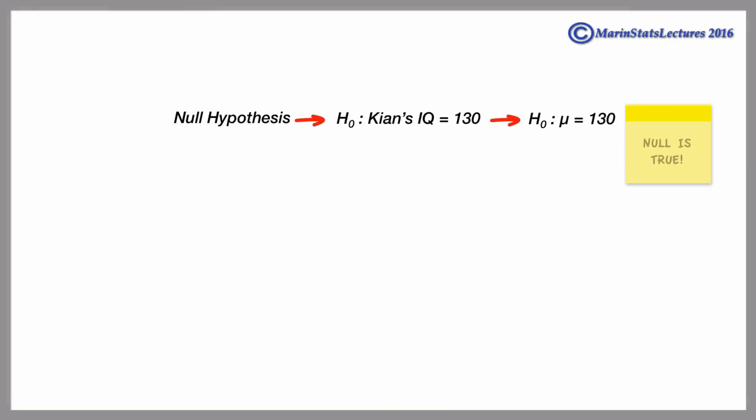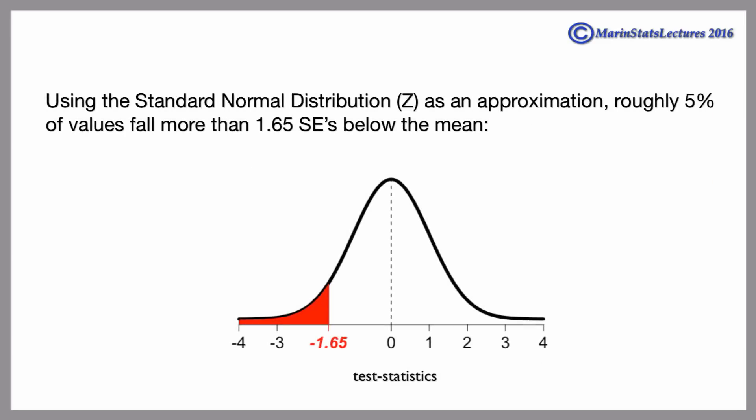Assuming the null hypothesis is true and the standard error of 5, the sampling distribution of the average would look as follows. Using the standard normal distribution as an approximation, roughly 5% of values fall more than 1.65 standard errors below the mean.